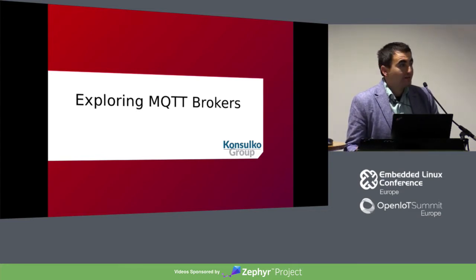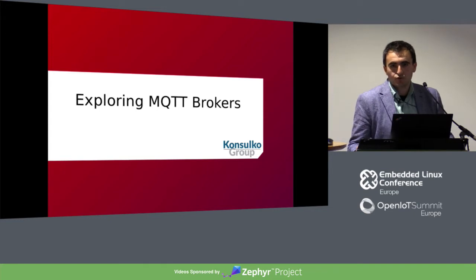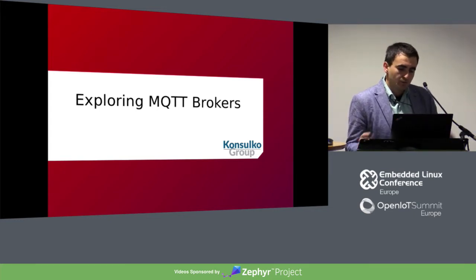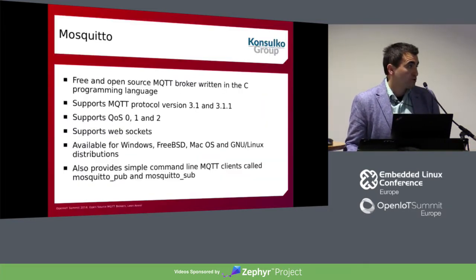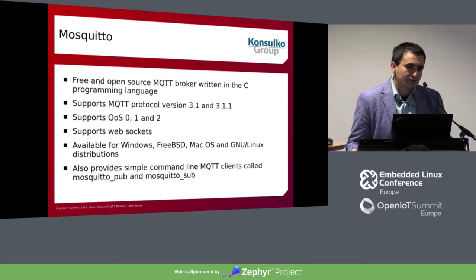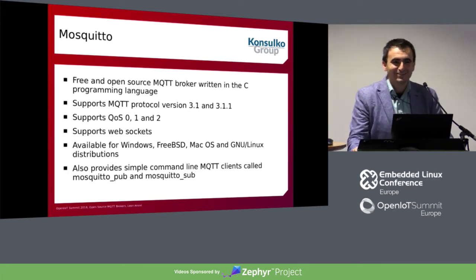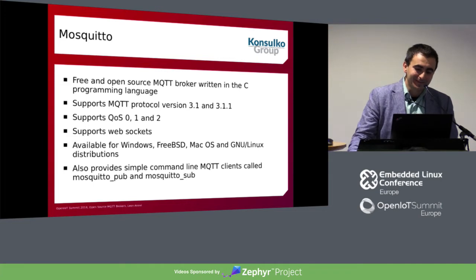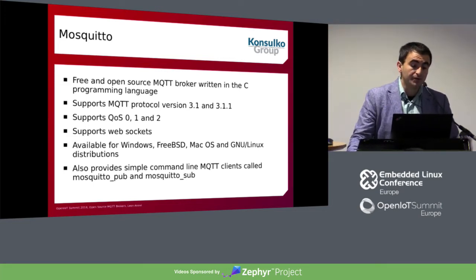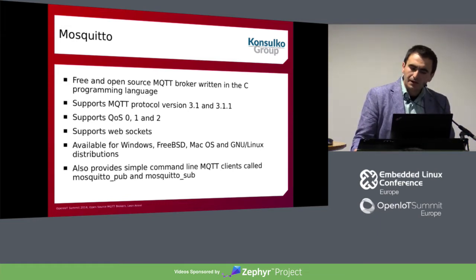Now we'll explore the MQTT brokers, focusing on open-source ones. Starting with Mosquitto — it's my favorite for home automation; I use it all the time for my own projects at home. It's a lightweight MQTT broker that's free and open source. It supports MQTT protocol versions 3.1 and 3.1.1, with work in progress for MQTT 5. It supports WebSockets — a few years ago it wasn't great, but at the moment it works really well.